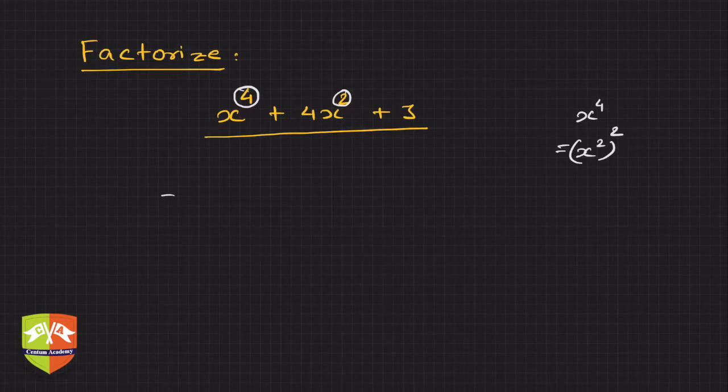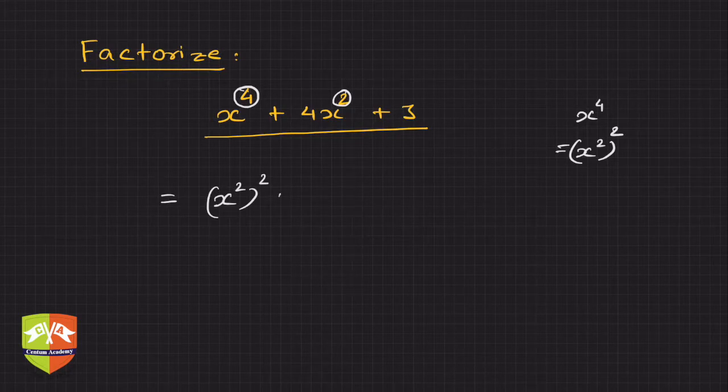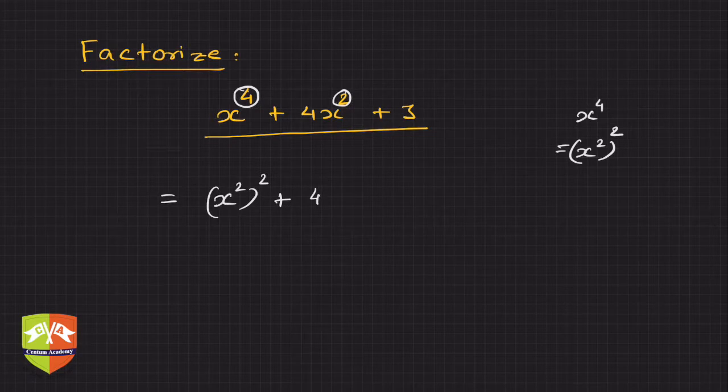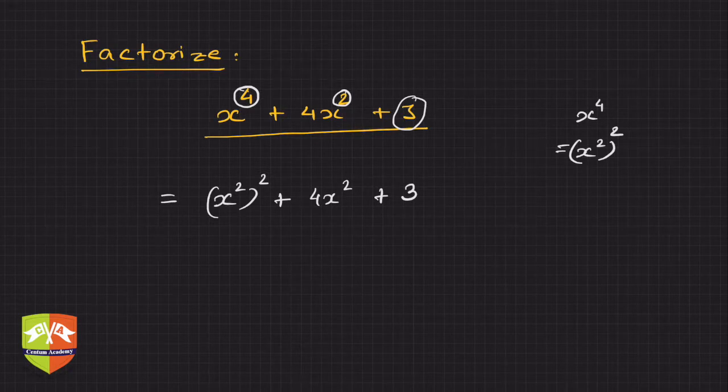Hence can I express this as (x squared) squared plus 4x squared plus 3? Now why is 4x given here and why is this 3? There must be some reason, right? So let's understand what's the reason.